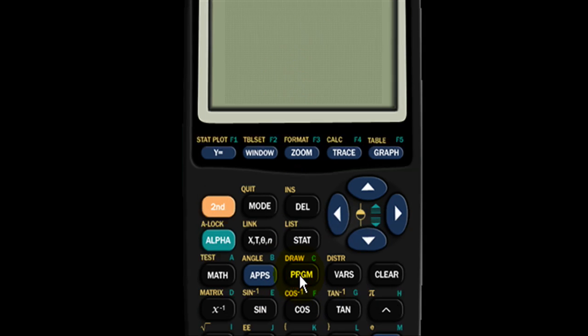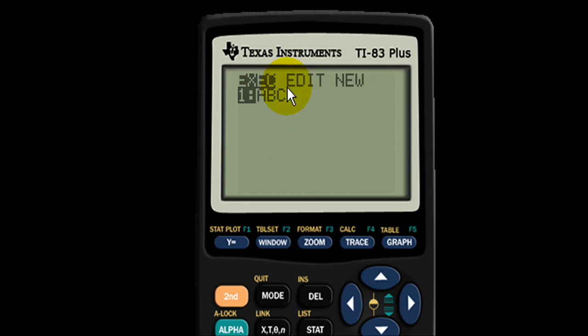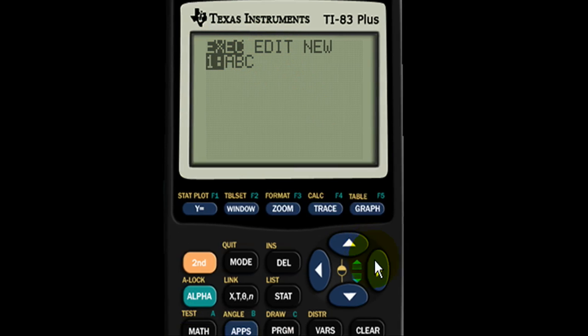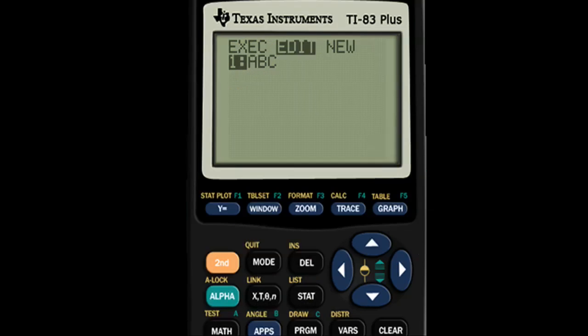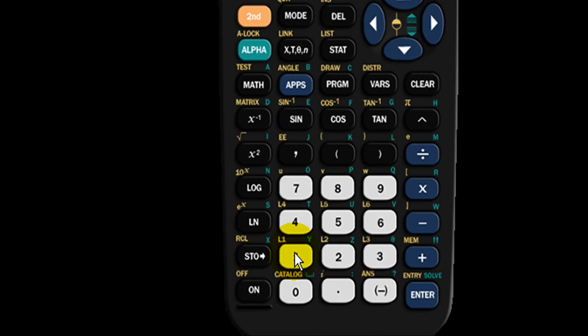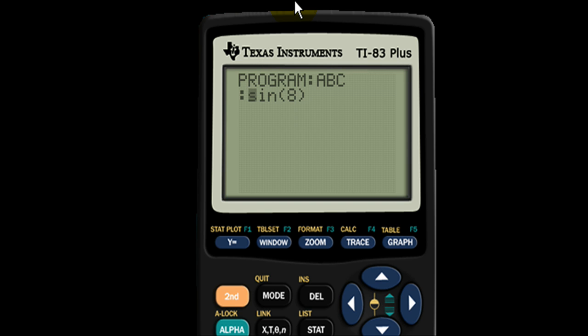And when I go back to program I can go to the information that I just stored by going to edit, clicking the right key once and then opening it, and then there it is. Program name ABC and then this is the information I want to know. Sine eight.